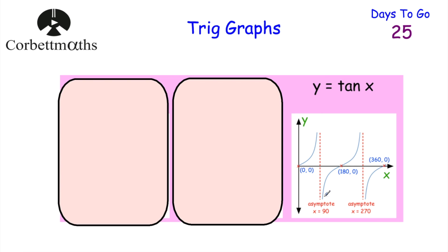If you do the tan of 91, that's equal to negative 57. So the graph comes up all the way, and when you do the tan of 180 degrees that's equal to zero. Then as you do the tan of numbers above 180 degrees, it gets higher and higher. Then we've got another asymptote at 270 degrees — if you do the tan of 270 degrees, you again get a math error. So the graph of y equals tan x starts at the origin, curves upward, has an asymptote at 90 degrees, comes back to zero at 180 degrees, curves up again, and has another asymptote at 270 degrees.